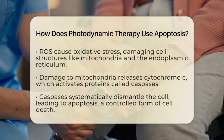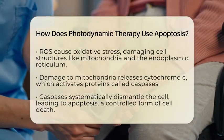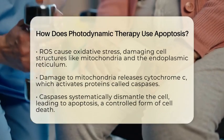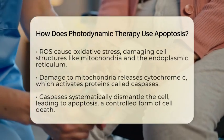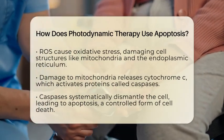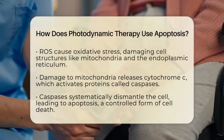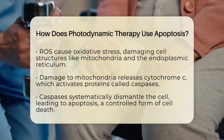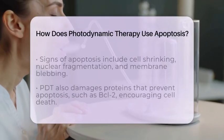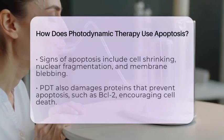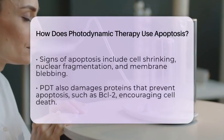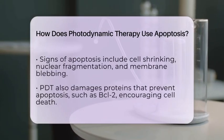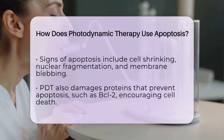The cell then shrinks, its nuclear material breaks apart, and the cell membrane forms blebs — all signs of apoptosis. This process is neat and tidy, meaning it avoids the inflammation and damage associated with other forms of cell death like necrosis.